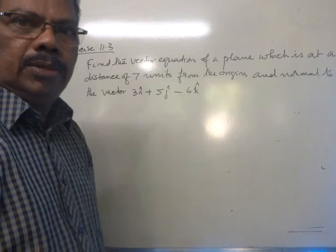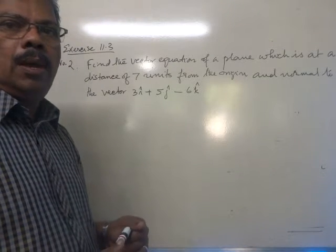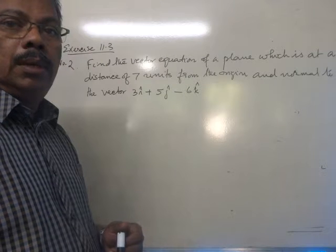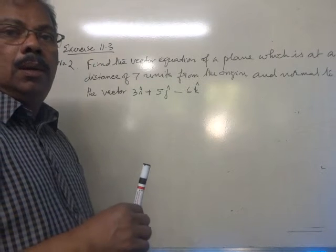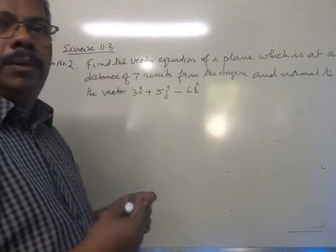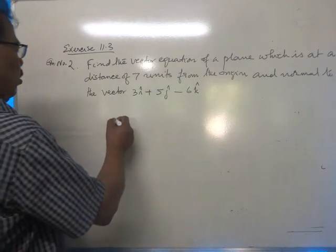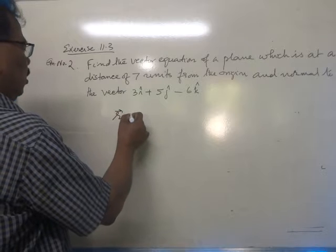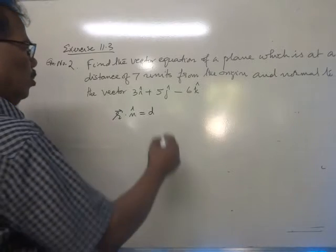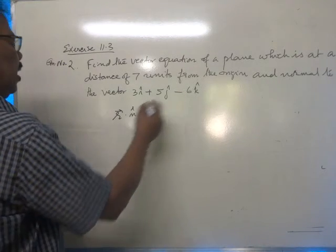We are given the distance of the plane from the origin and the normal from origin. Now we have the equation r dot n cap equals d. So we need to get n cap.